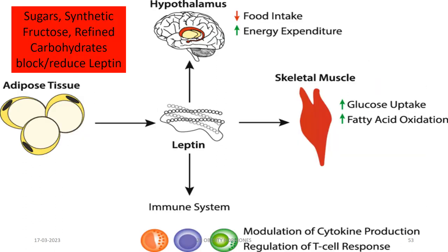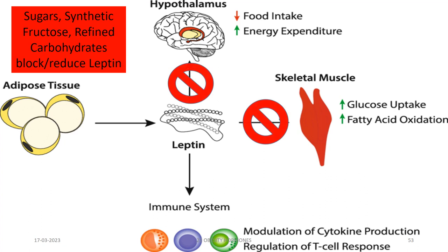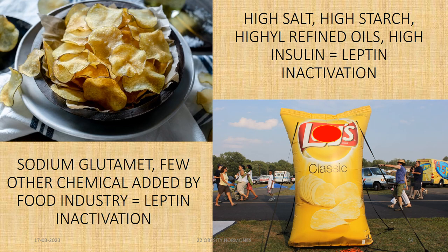Sugars, synthetic fructose contained in high-fructose corn syrup, and refined carbohydrates all block or reduce leptin, so the brain does not receive the satiety signal. This leads to overeating in spite of not needing the calories. High salt, high starch, highly refined oils, and high insulin all lead to leptin inactivation. Leptin is also inactivated by certain chemicals added by the food industry — especially in foods such as potato chips.